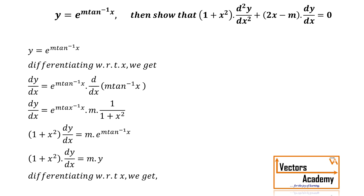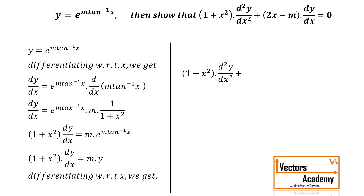Now we will differentiate again. This time on the left hand side we have the UV rule. The first term is 1 plus x² and the second term is dy by dx. So differentiating them: 1 plus x² into d²y/dx², plus dy by dx into derivative of 1 plus x², equals m into derivative of y, which is dy by dx.